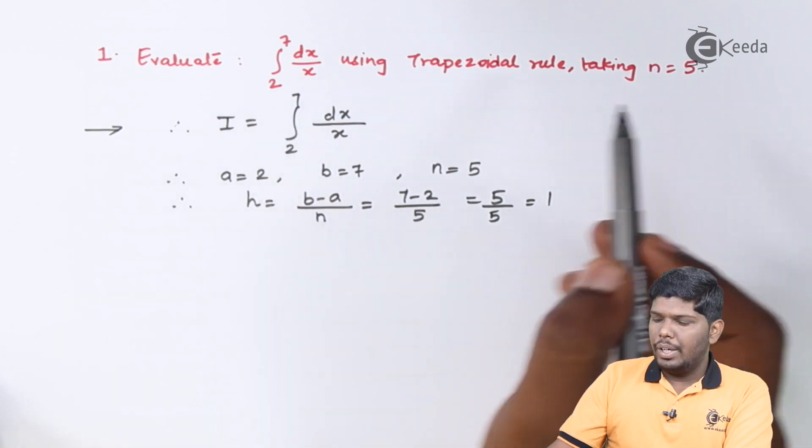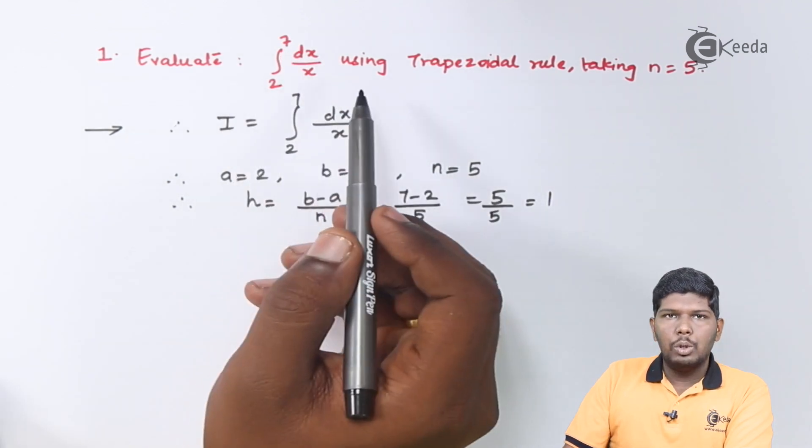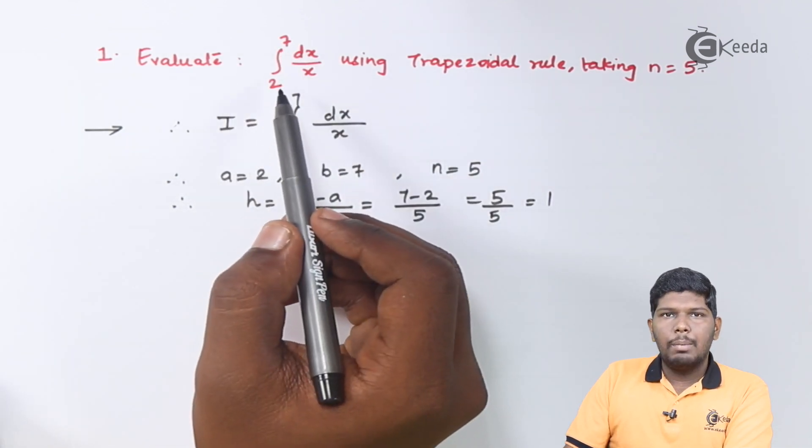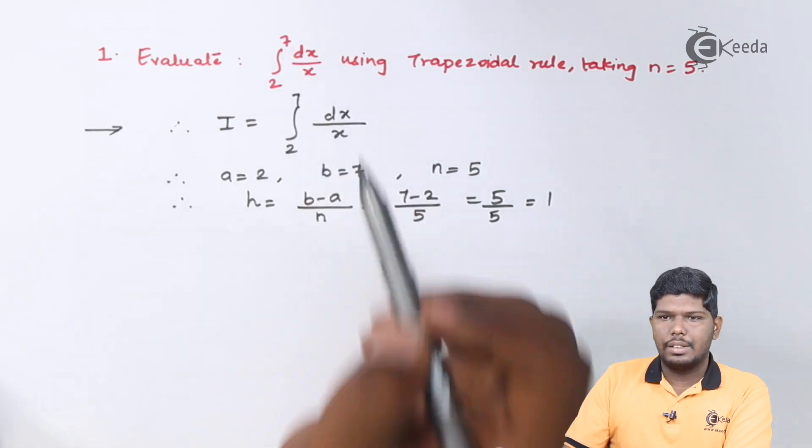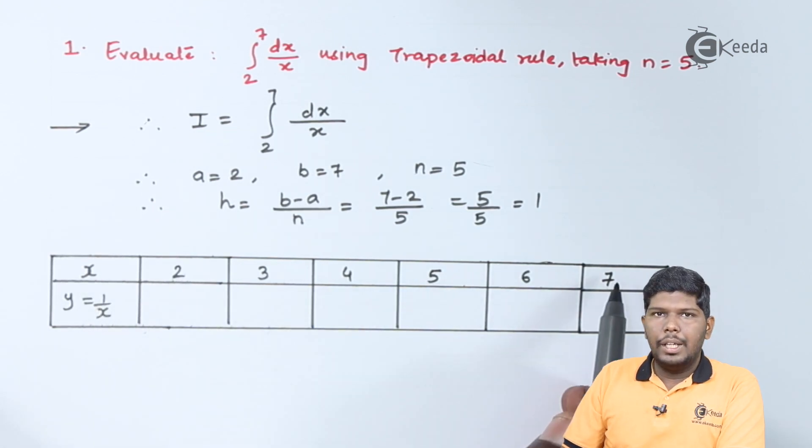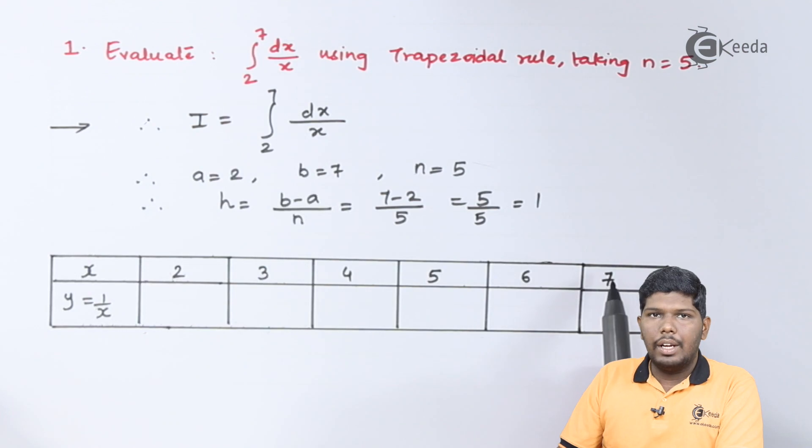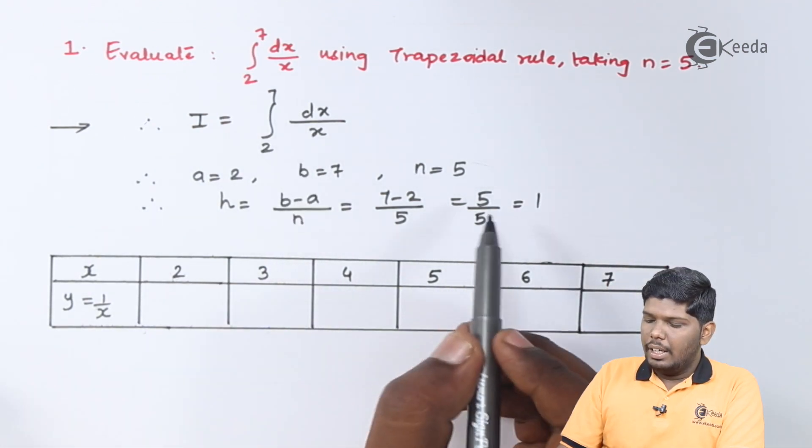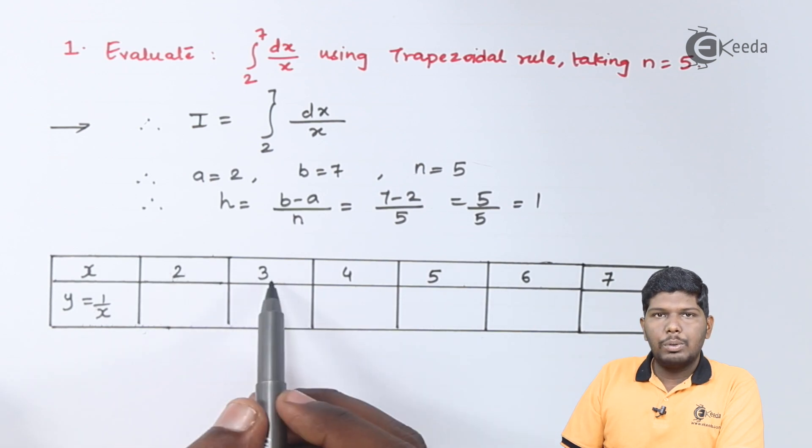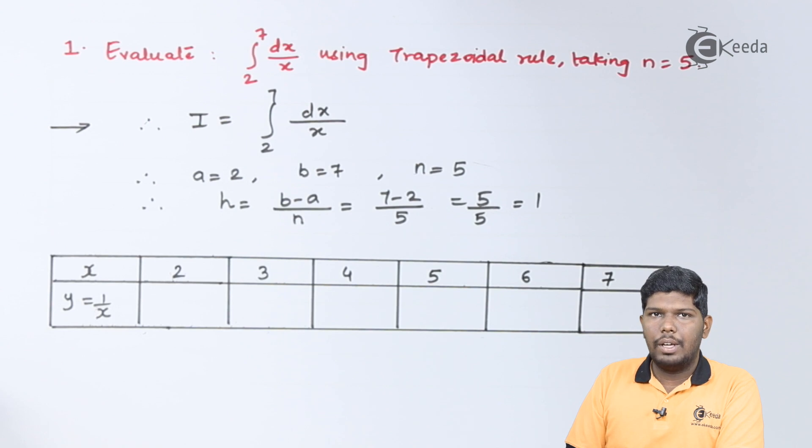So starting from 2 we will increase each number by 1 up to 7. That will be the values of x. Let us make the table where we are going to represent x and the value of 1 upon x. In this table we are going to write the limits of x. x is starting from 2 and will end at 7. Number of parts should be equal to 5 and after that each will be increased by 1. So 2 plus 1 will give you 3, 3 plus 1 will give you 4 and 5, 6 and at last we will have 7.